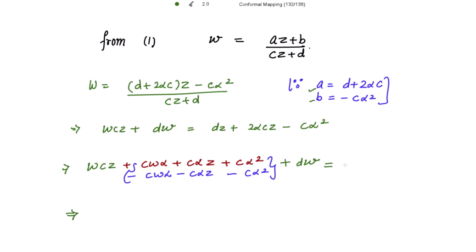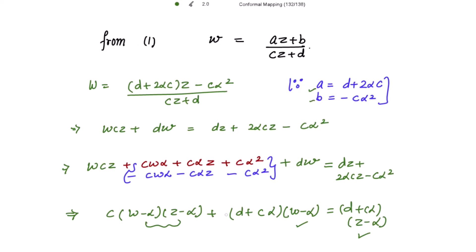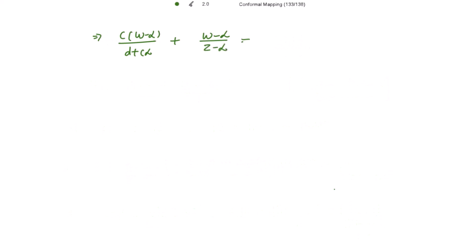The right-hand side equals dz + 2αcz - cα². Taking common factors, we get c(w - α)(z - α) + (d + cα)(w - α) = (d + cα)(z - α). You can see that each term has either (z - α) or (w - α), with the first term having their product. Dividing through by (d + cα)(z - α), we get c(w - α)/(z - α) + (w - α)/(z - α) cancelled, yielding an expression in (w - α) over (z - α).